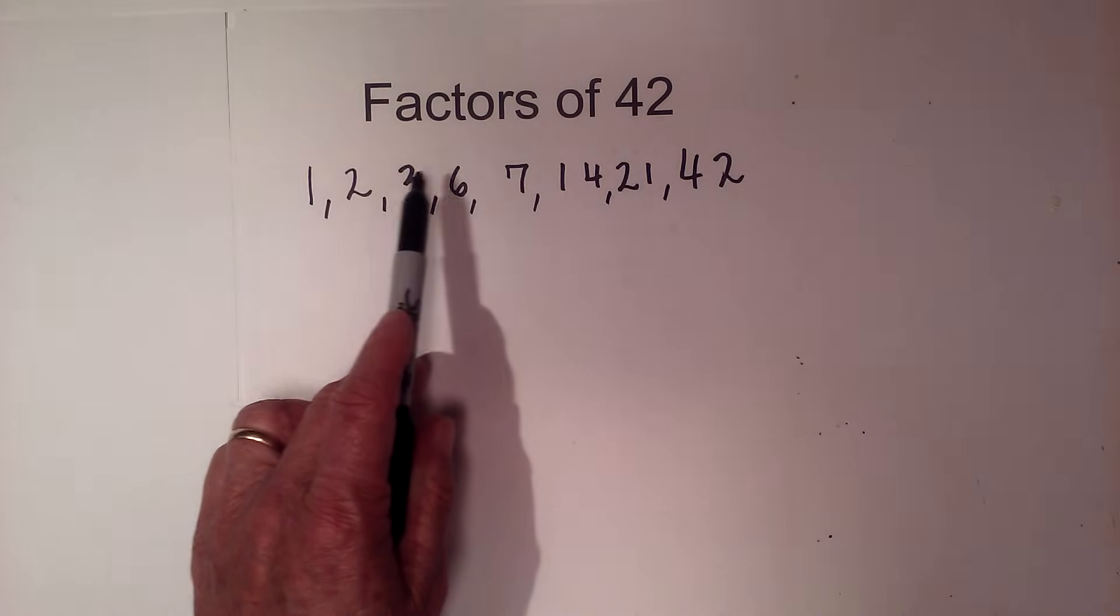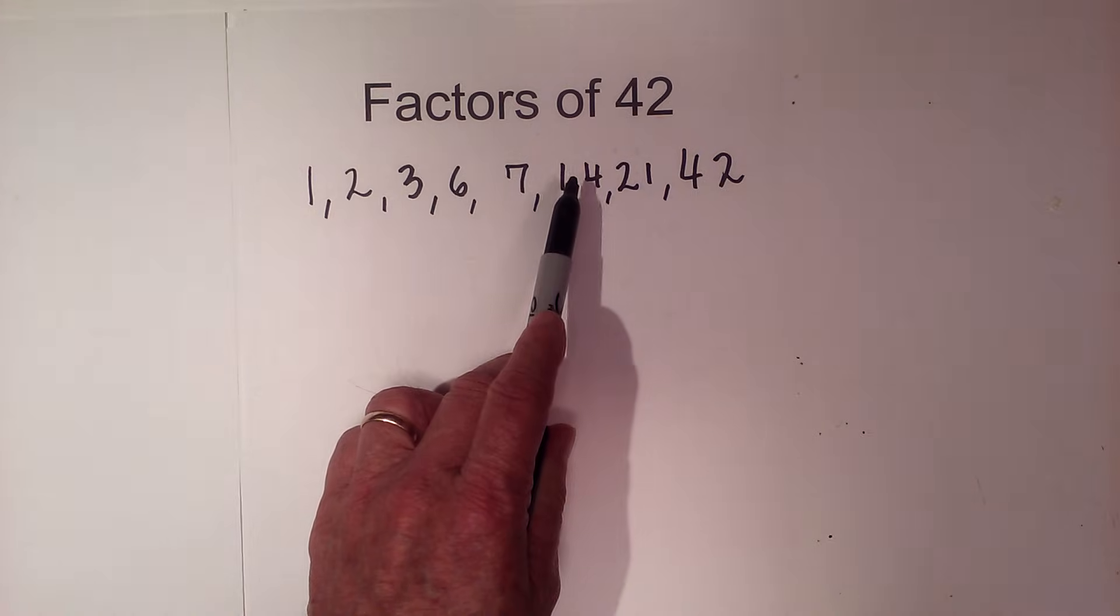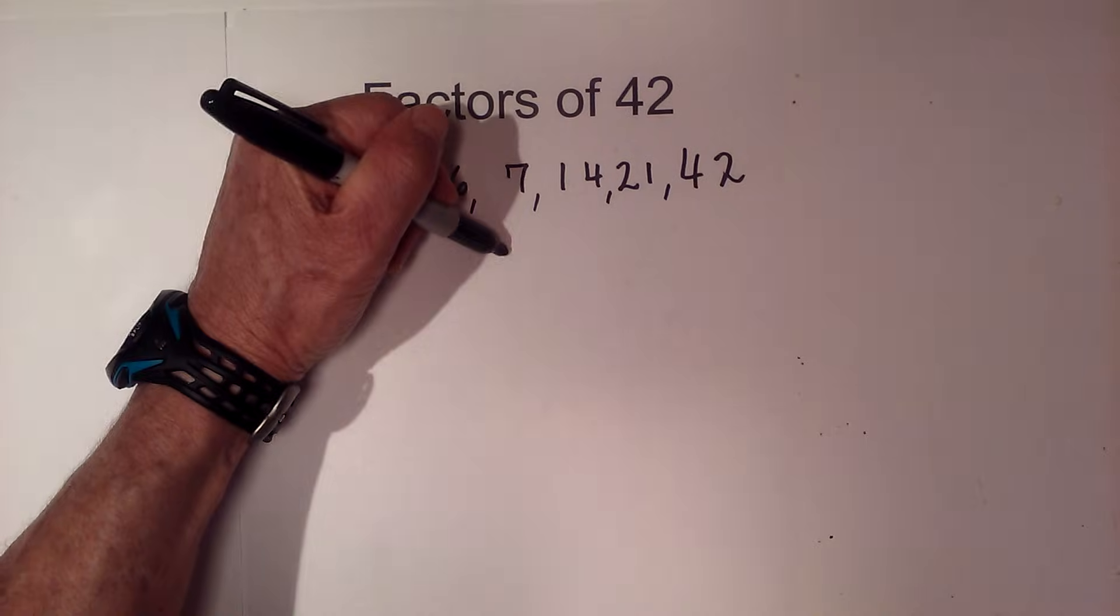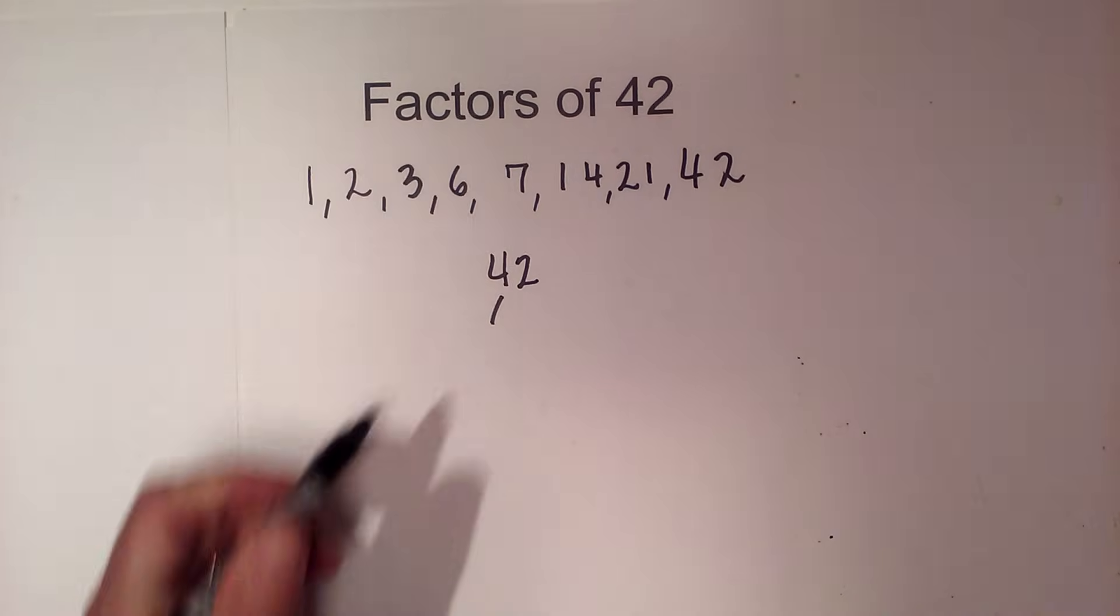They are 1, 2, 3, 6, 7, 14, 21, and 42. Now let's find all the prime factors, or the prime numbers that multiply together to equal 42.